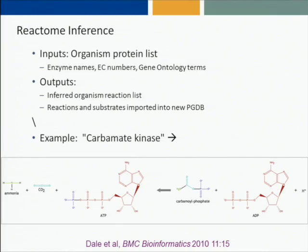The inputs to the reactome inference step are simply the protein list of the organism. More specifically, what we'd like to have ideally for each protein in the genome is a function name for the protein — like carbamate kinase — its EC number if it's an enzyme, and the gene ontology terms describing the function of the protein. EC numbers and gene ontology terms come from a controlled vocabulary, making it easy for computers to interpret, as opposed to natural language descriptions of enzyme function. The outputs of reactome inference are simply a list of the biochemical reactions catalyzed by the enzymes of the organism.